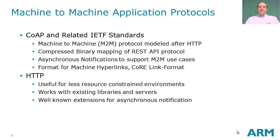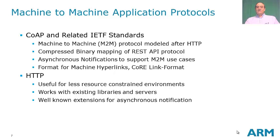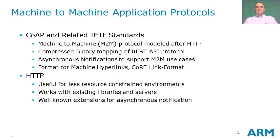For machine-to-machine application protocols, we have CoAP. It's a machine-to-machine protocol modeled after HTTP — a compressed binary mapping of the REST API protocol. It has enhancements to support machine-to-machine use cases, like asynchronous notifications and special hyperlinks that support machine-to-machine communication. For less constrained networks, we can still use HTTP.